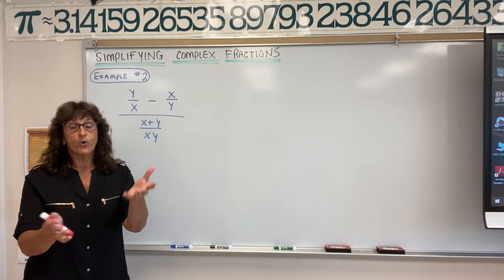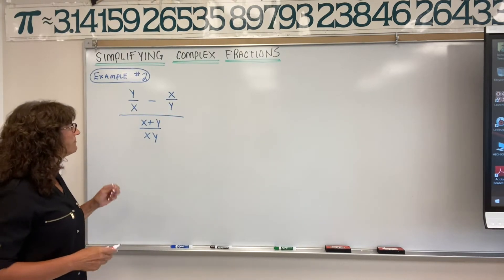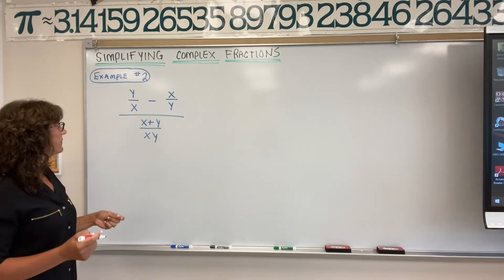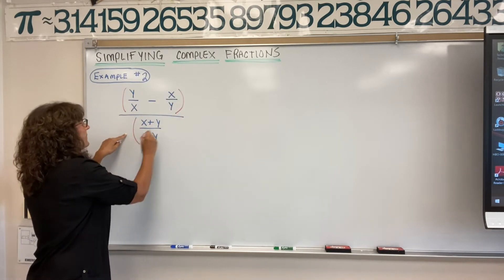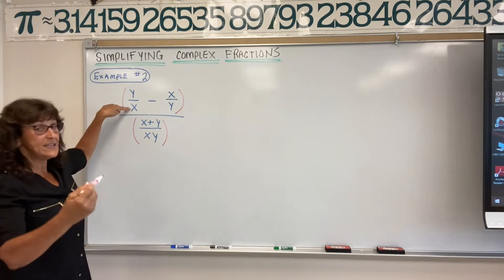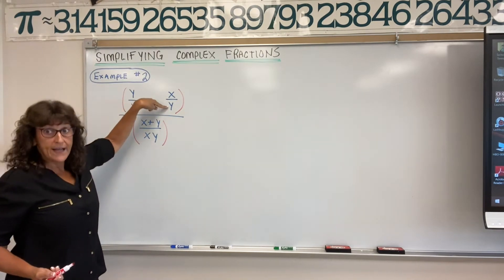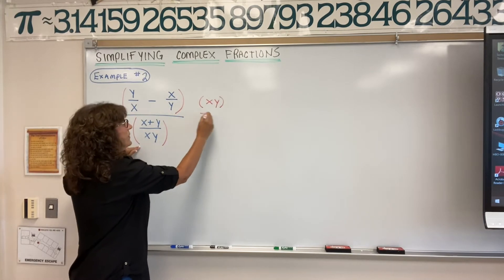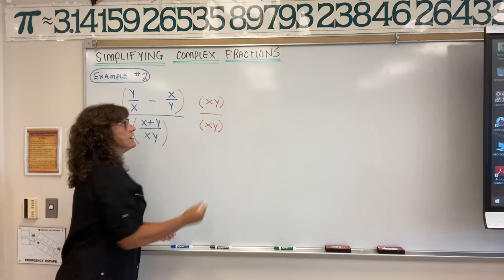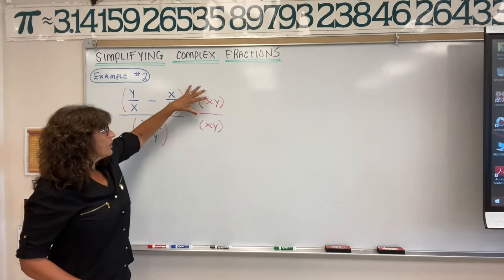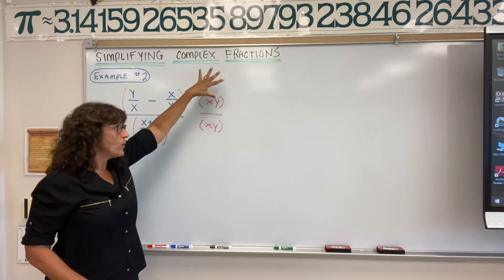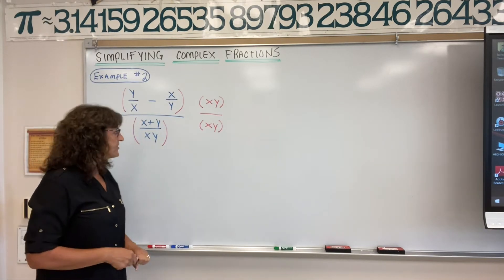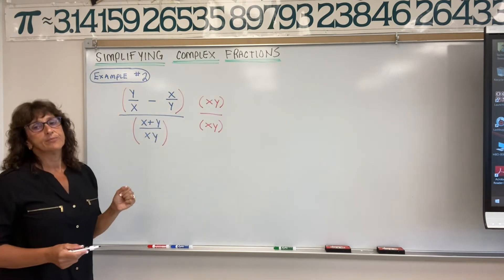We want to write it in simplest form so you don't have fractions inside fractions. Let's take the numerator and denominator and multiply by the least common multiple. What is the least common multiple? We need an x and a y — we need x and a y again. So if you multiply top and bottom by x and y, that takes care of it. We multiply by xy over xy, and since xy over xy reduces to one, we're not changing the value, just the form.